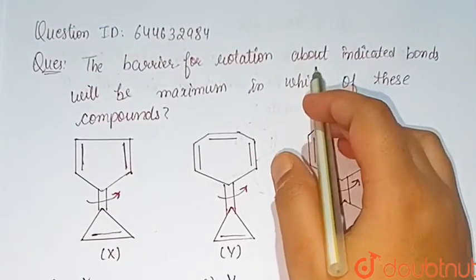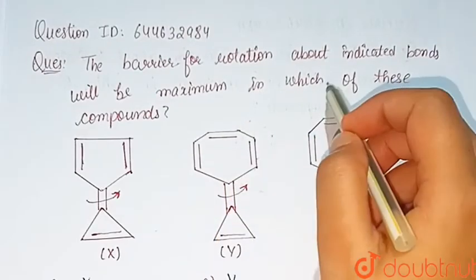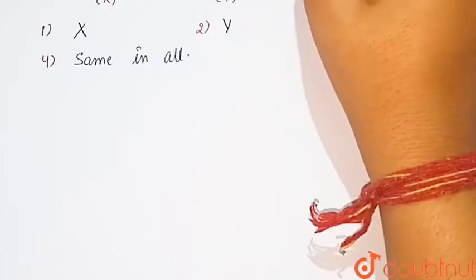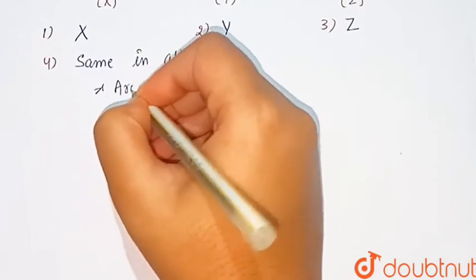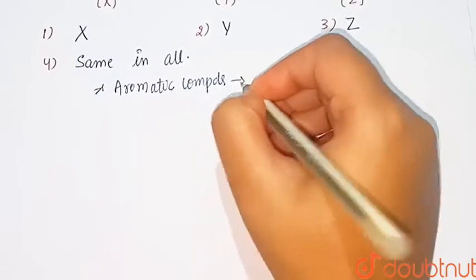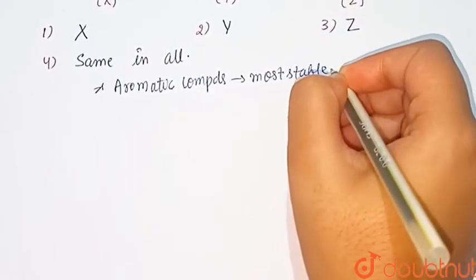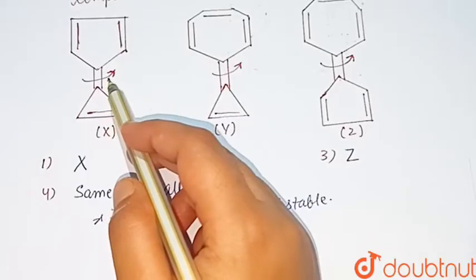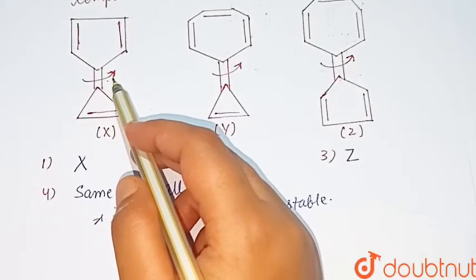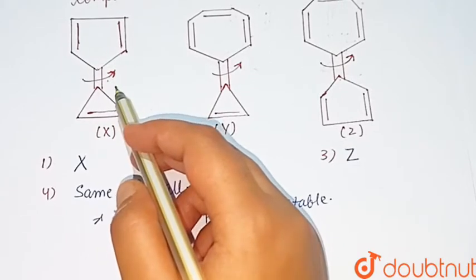Our question is: the barrier for rotation about indicated bonds will be maximum in which of these compounds? We know that aromatic compounds are more stable. So here we will polarize the middle double bond and convert into plus and minus here.